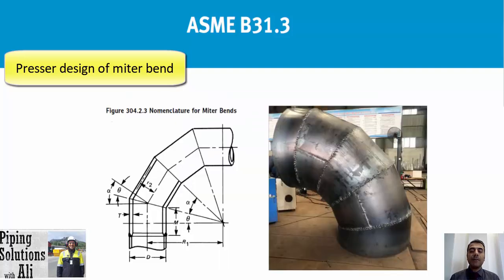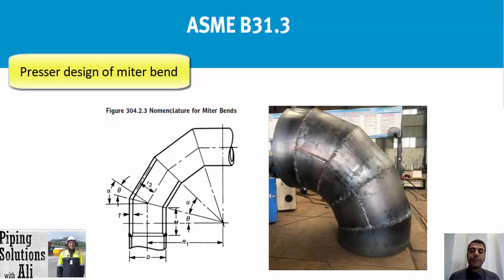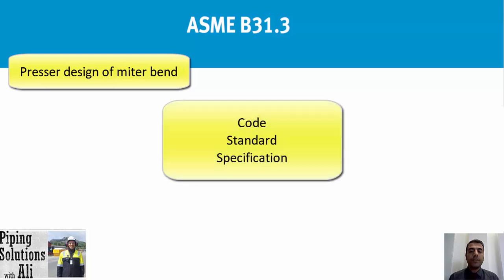Such statements about miter bends are not accurate. In this episode we would like to clarify these uncertainties by referring to the code and standard. As a recommendation, the general rule should be that any claim in piping should be verified by referring to the code, standard, and specification. Please search for the philosophy behind any claim.